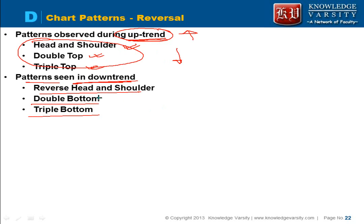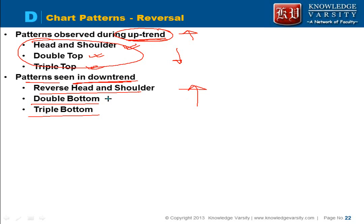When you see downtrend patterns, the stock price will increase. So head and shoulder pattern is in an uptrend, and reverse head and shoulder is in the downtrend. Let us see these examples.